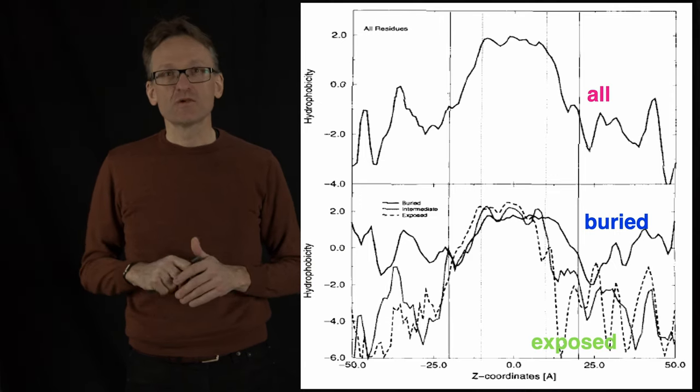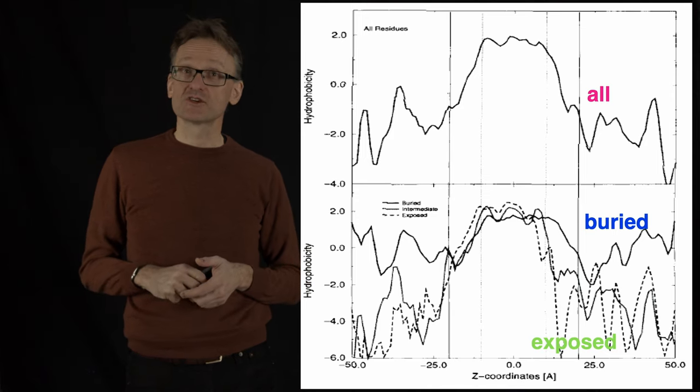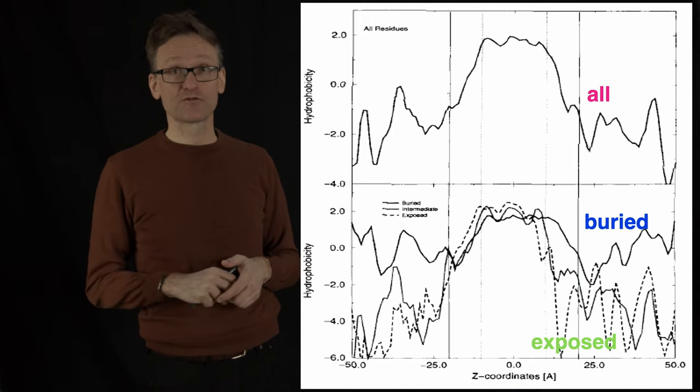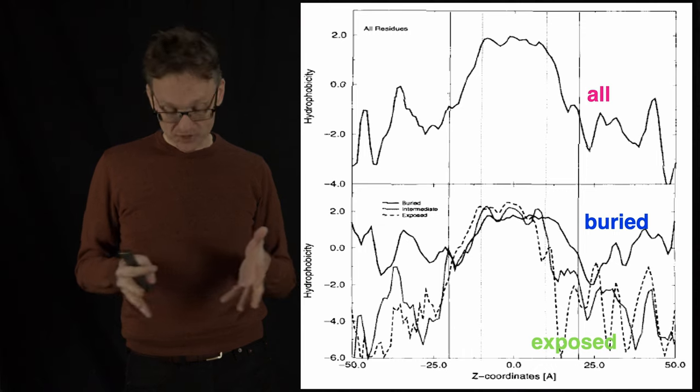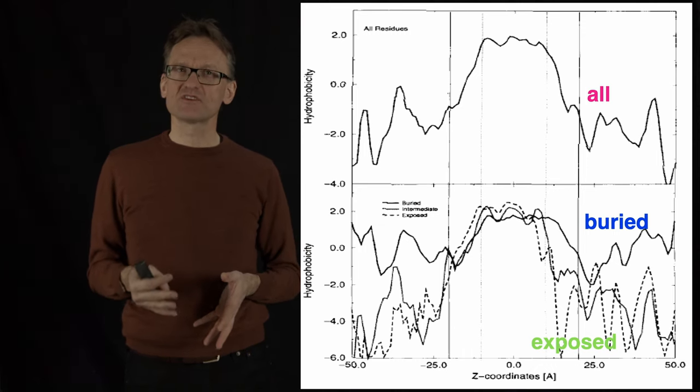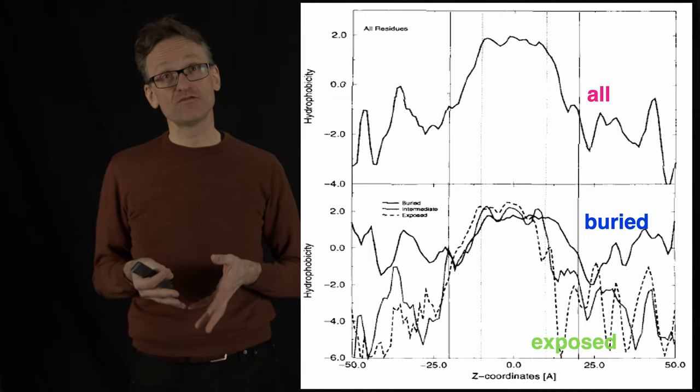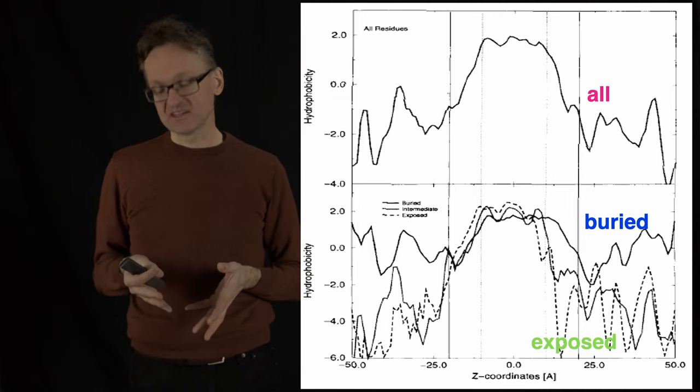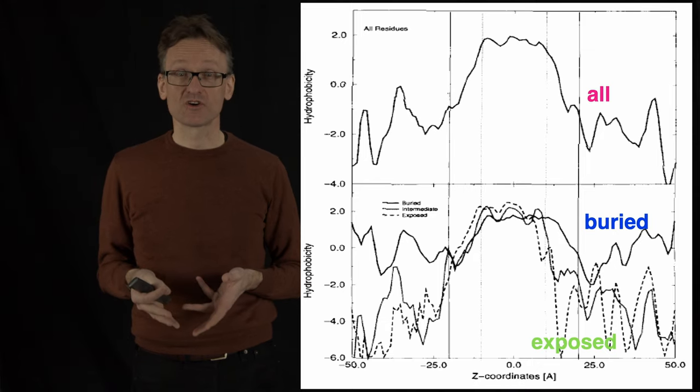Initially, I think we went a bit wrong there as a community because some of the first structures we determined were, for instance, channels or things with a hole. And these holes frequently contain water. So those are the exceptions where it makes sense to have a few amino acids that might be polar or even charged.